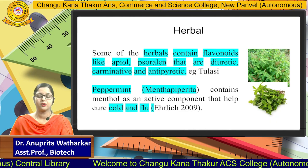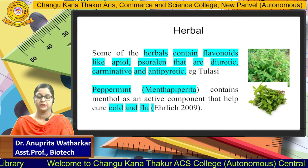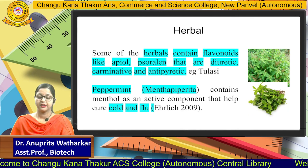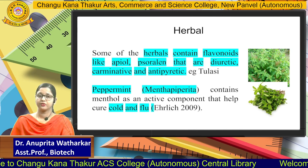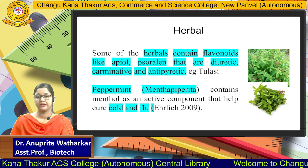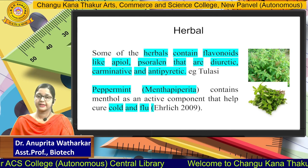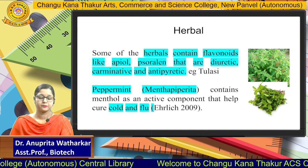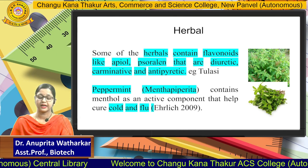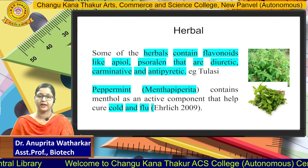Some herbals contain flavonoids like apiol and suryllin that are diuretic and carminative — meaning they reduce flatulence — and antipyretic, meaning they reduce fever. For example, the tulsi plant. Peppermint contains menthol as an active component that helps cure cold and flu.